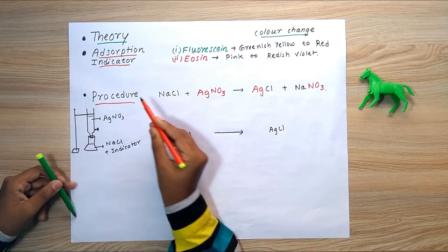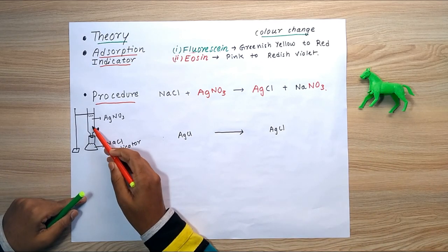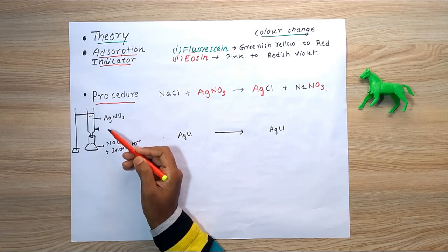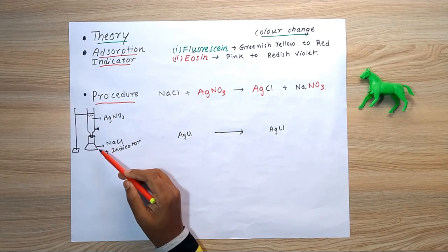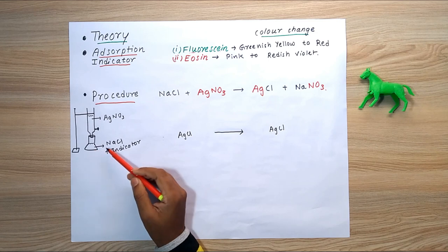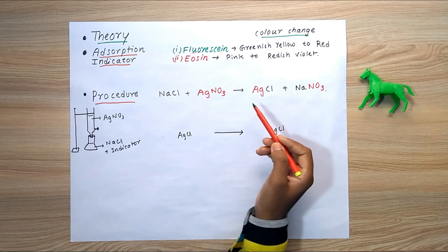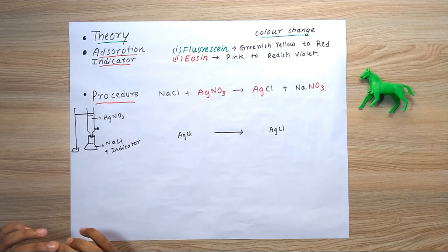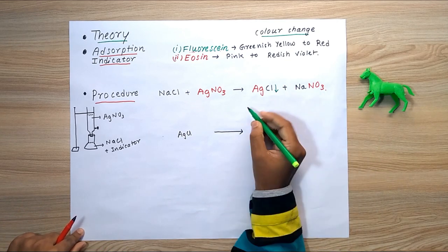For the main procedure, we have a burette and a conical flask. In the burette we have AgNO3 (silver nitrate), and in the conical flask we have NaCl, where chlorine is our unknown analyte to be determined, along with the indicator. NaCl reacts with AgNO3 in a displacement reaction to form AgCl and NaNO3. The AgCl forms an insoluble precipitate.